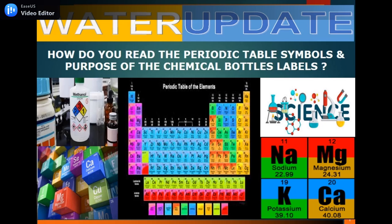Please watch till the end of this video. You will get to know what is the periodic table, how many elements are in the periodic table, what is the purpose of the periodic table, what is atomic number, atomic weight, what are subscripts in chemical formulas, and what is anhydrous and hydrous — all these details you will learn through this video.